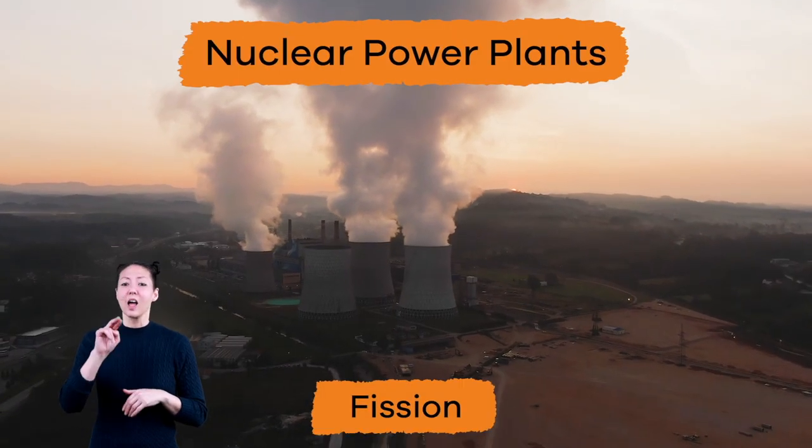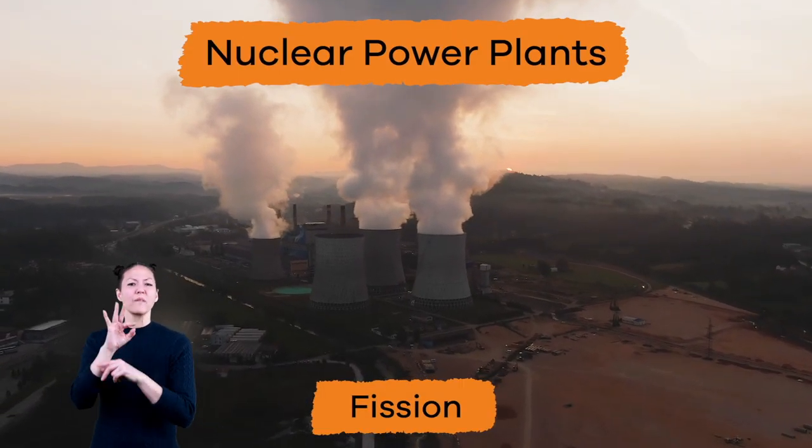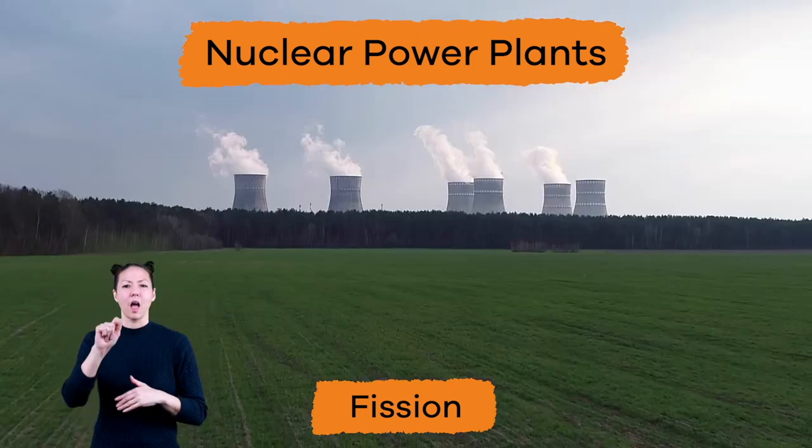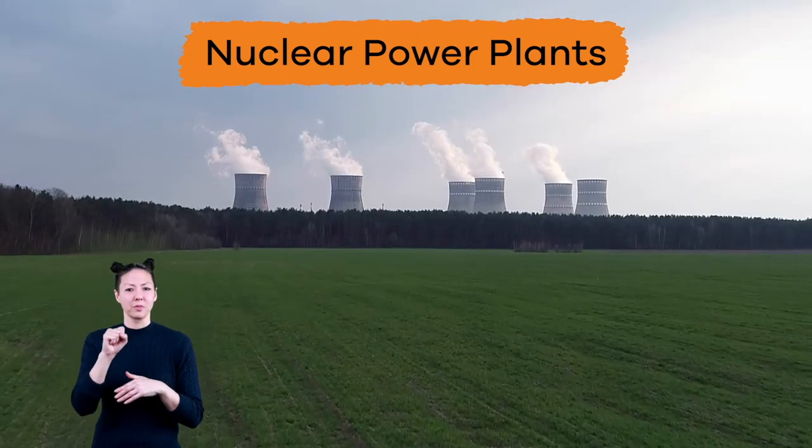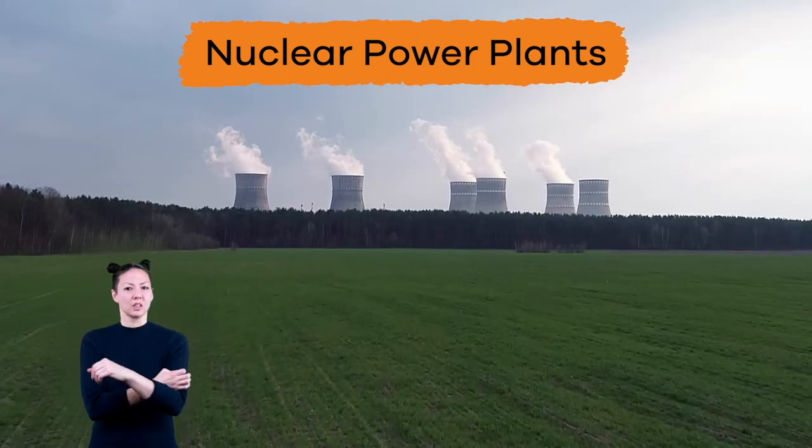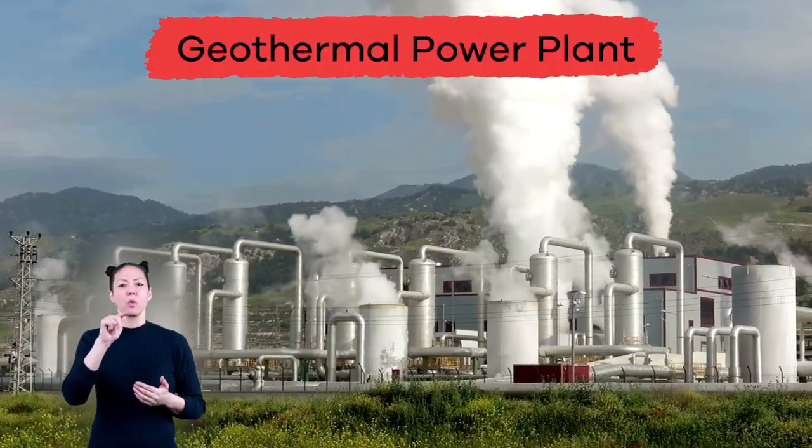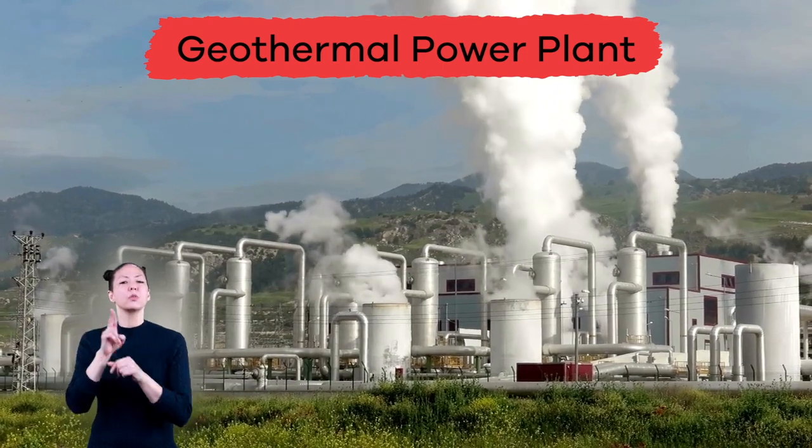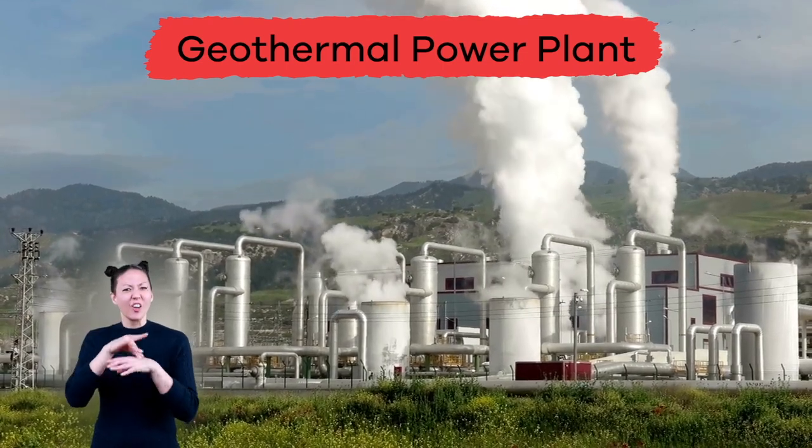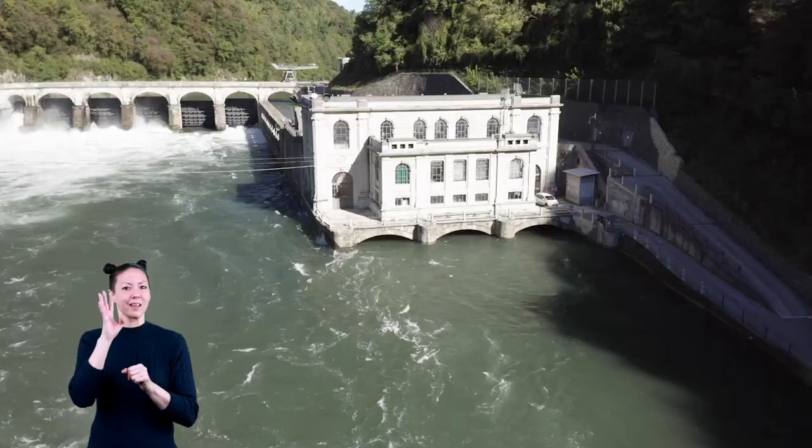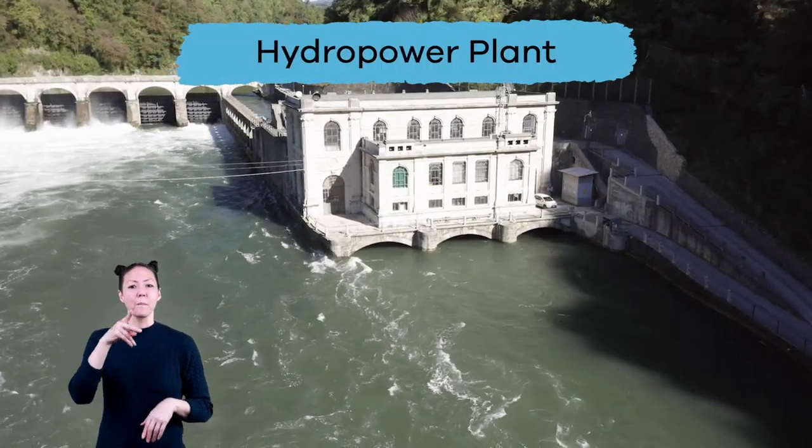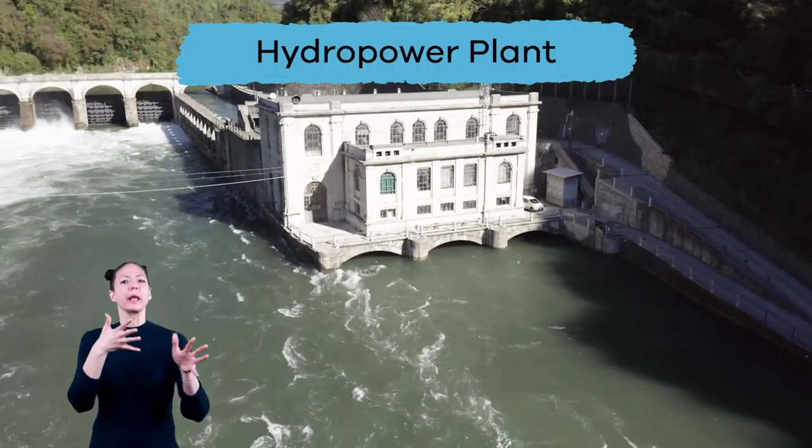Nuclear power plants use fission, which means splitting atoms. Splitting the atoms creates energy, which produces heat, which also creates steam. Geothermal power plants use the heat located inside the Earth to create the steam. And hydropower plants use wind and moving water to create the steam.